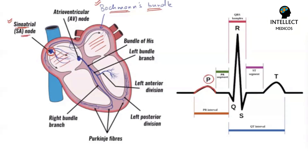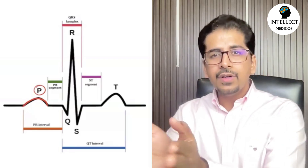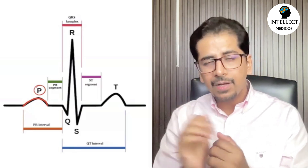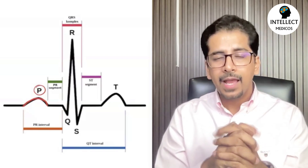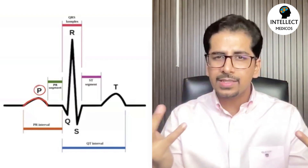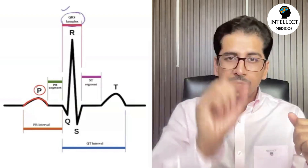This impulse from the SA node goes to the AV node, where there is some kind of refractory period. From the AV node, the impulse goes to the bundle of His, further into the two bundles — the right and the left bundle. The left bundle divides into anterior and posterior fascicles; there is no fascicle on the right side. It further goes into the Purkinje fibers, depolarizing the ventricles, and this is depicted on the ECG as the QRS complex.